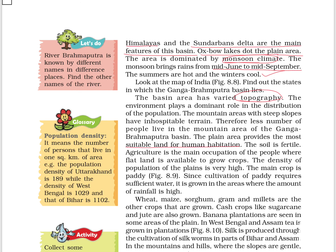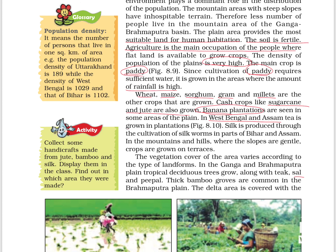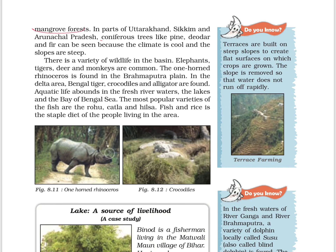The plains provide suitable land for human habitation, with fertile soil. Agriculture is the main occupation and population density is very high. The main crop is paddy, grown in high-rainfall areas. Wheat, maize, sorghum, gram, and millets are also grown. Cash crops like sugarcane and jute are grown, and banana plantations can be seen. In West Bengal and Assam, tea is grown, and silk is produced through silkworm cultivation in parts of Bihar and Assam. Tropical deciduous trees like teak and sal grow in the Ganga and Brahmaputra plains, and thick bamboo groves are also common.